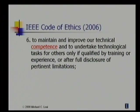Sixth, to maintain and improve our technical competence and to undertake technological tasks for others only if qualified by training or experience, or after full disclosure of pertinent limitations. Here is an obligation for clients and employers that engineers should take only jobs that they can do competently. And of course, that's difficult to do with new technology, so the IEEE code also includes the phrase "only after full disclosure of pertinent limitations." Notice also that this provision obligates engineers to improve their technical competence — not simply to perform work for which they are competent, but also to improve their own technical competence, meaning an obligation to engage in continued professional development.